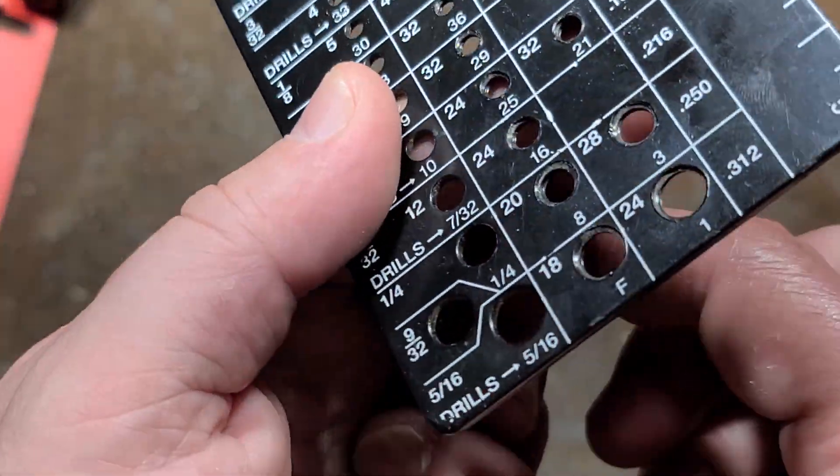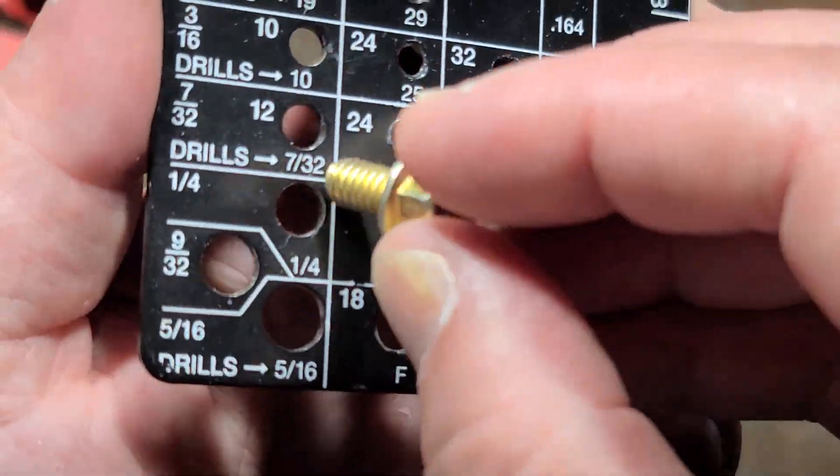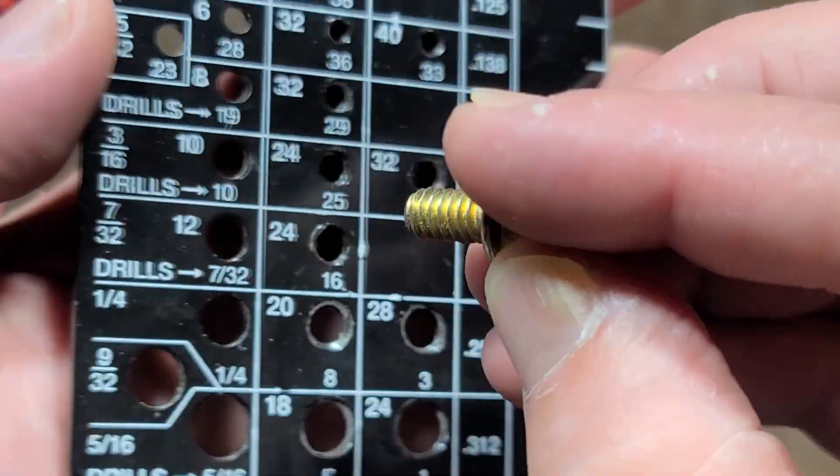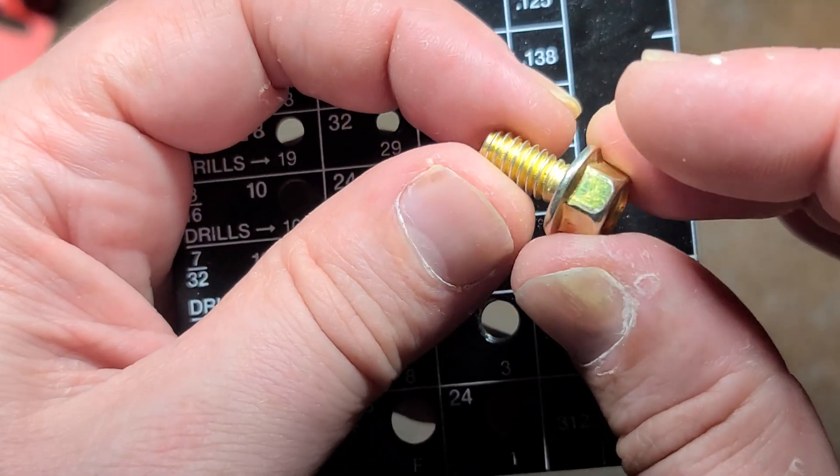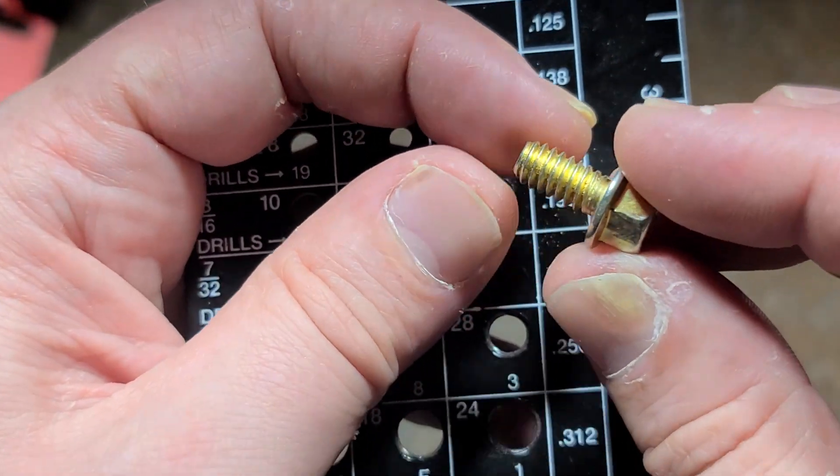So what that means, say like on this fastener it's a quarter inch 20. So if you want the fastener, it's just a quarter inch hole. Remember on threaded fasteners or with threads in general, regardless if it's metric or fractional,